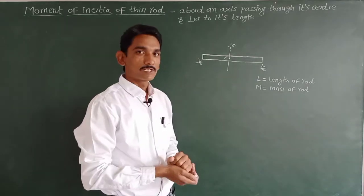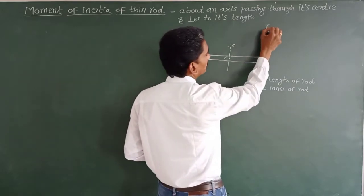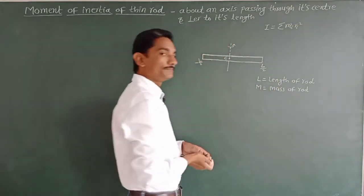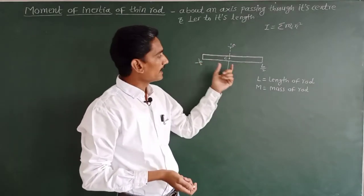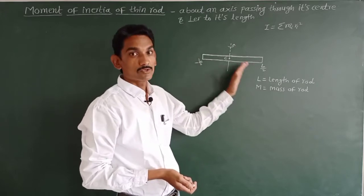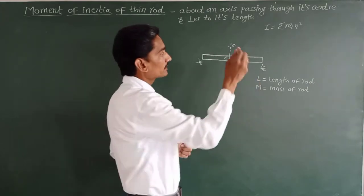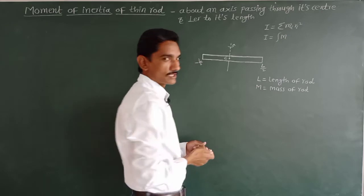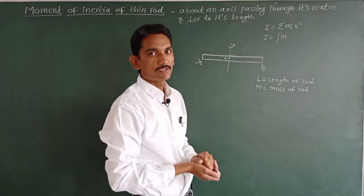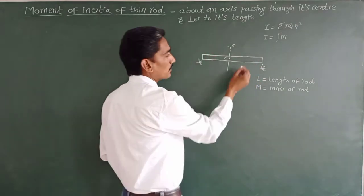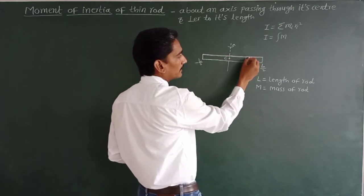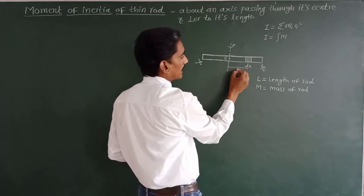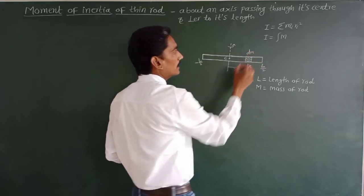How can we determine the moment of inertia? In general, we know that moment of inertia is the summation of m_i r_i squared. But this rod is continuous and the mass within this rod is continuously distributed. So we use integration: I equals the integration of dm into the distance squared. We consider a small element having thickness dx, at distance x from the axis of rotation, and having very small mass dm.